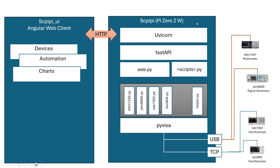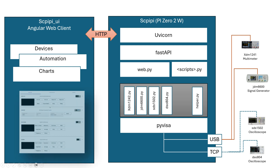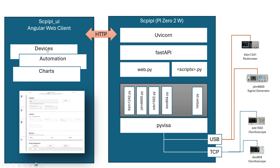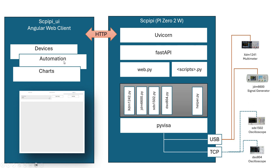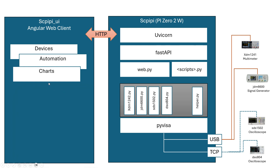Over on the Angular web client, it exposes three main pieces of functionality: viewing the devices and getting readings, automation functionality — for creating automation scripts, saving them, and running them — and a charts capability where it can take the results of running one of those automation scripts and chart it.